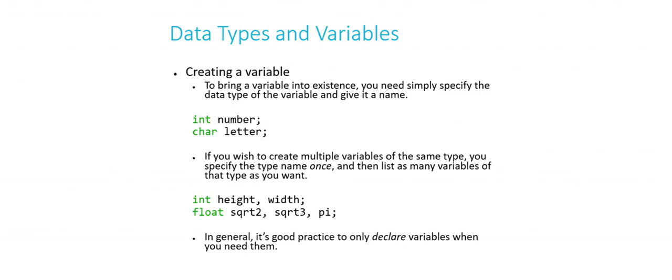But I'm allowed to, thanks to C syntax, consolidate it into a single line. Int height comma width semicolon. It's the same thing. I've created two variables, one called height, one called width, both of which are capable of holding integer type values.